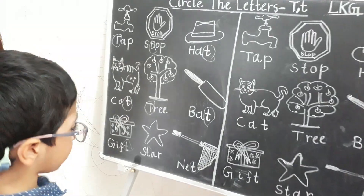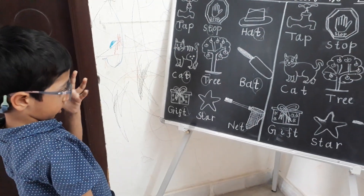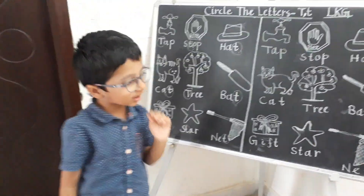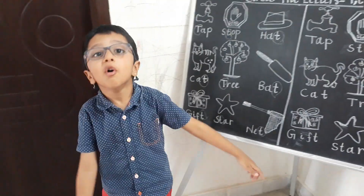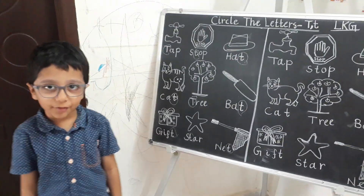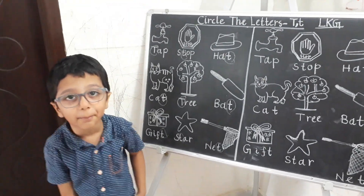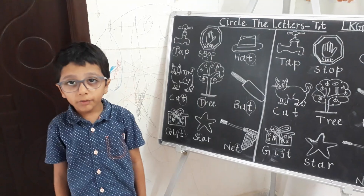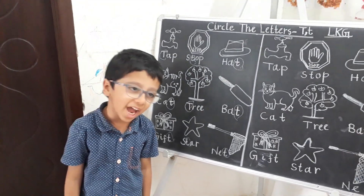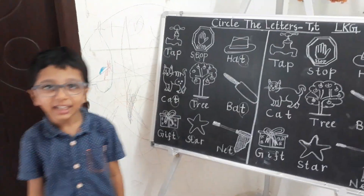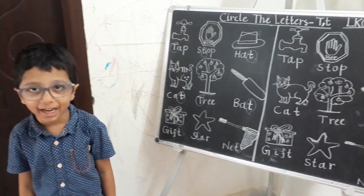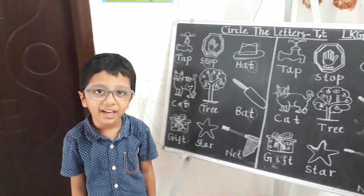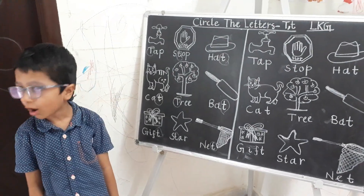Awesome! Can you tell me the Jolly Jingle for letter T, Adarsh? Letter T Jolly Jingle. Tata tata tata tata tata. When I watch the tennis game, when I watch the tennis game, my head goes back and forth. Tata tata tata tata tata. When I watch the tennis game, my head goes back and forth. Awesome!